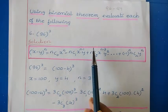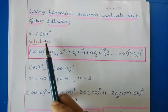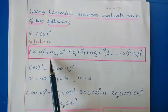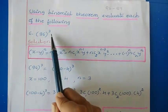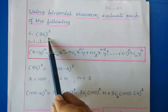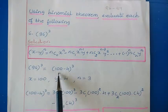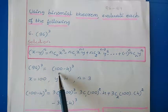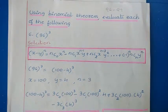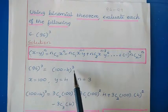Using binomial theorem, evaluate each of the following. Question number 6: 96 to the power 3. To evaluate any value using binomial theorem we need two variables, but here we have only 96 to the power 3. In such situations we can write the value in terms of 100, so 96 can be written as 100 minus 4 to the power 3.